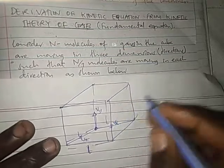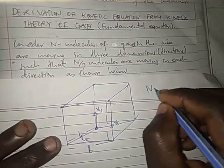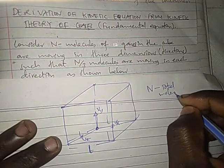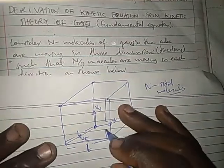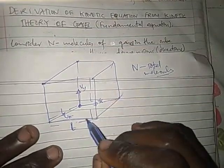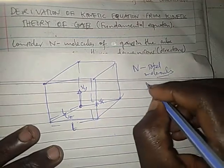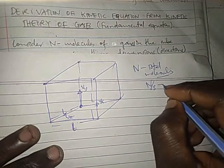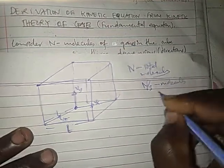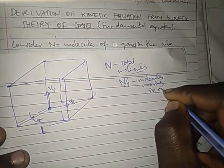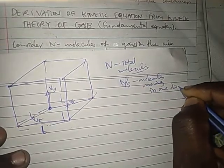So now, if you have total N molecules, these are your total molecules. Total molecules are N. So if the total molecules are N, it means the molecules moving in one direction is N divided by three. These are molecules moving in one direction.